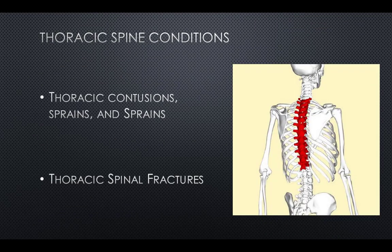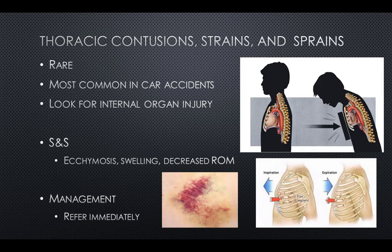Thoracic spine conditions include thoracic contusions, sprains and strains, and thoracic spinal fractures. Thoracic contusions, sprains, and strains are rare, most commonly seen in car accidents from the chest hitting the steering wheel. If there are bruises on the thoracic cavity, it is imperative to also examine for internal organ injury, as broken ribs can puncture the lungs or heart, resulting in catastrophic injury.